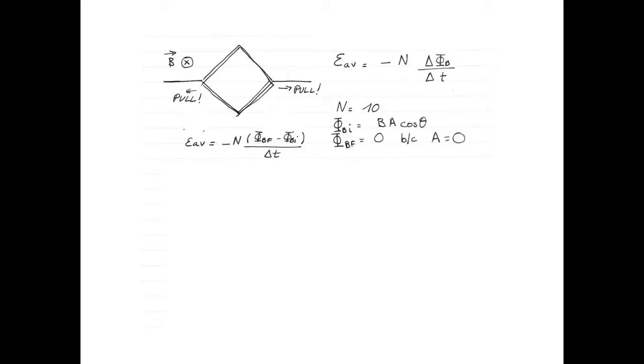The number of turns is 10, so that's easy. Our initial flux will be given by BA cos theta, where theta is the angle between the magnetic field and the area vector.